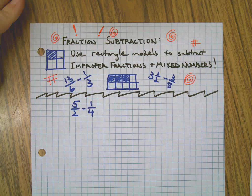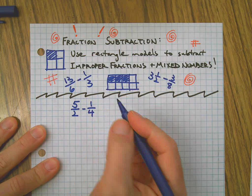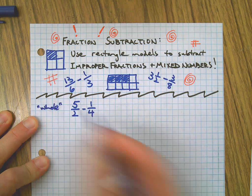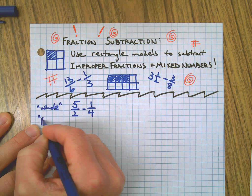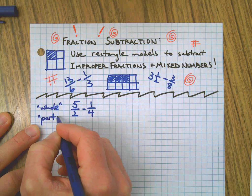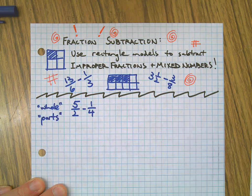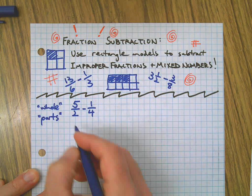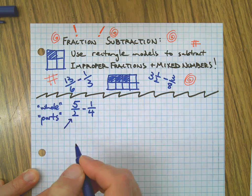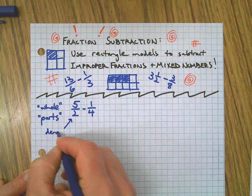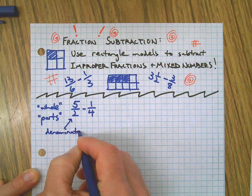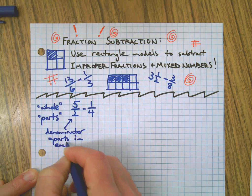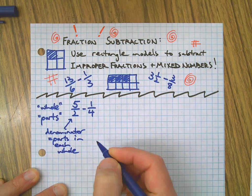First, some vocabulary we'll be using throughout this video: the 'whole thing' and the 'parts' or 'each part.' So for example, here we've got an improper fraction, five halves, and the denominator tells you how many parts are in each whole.